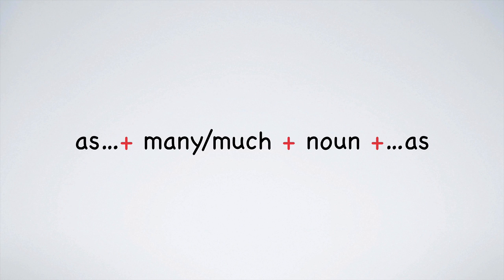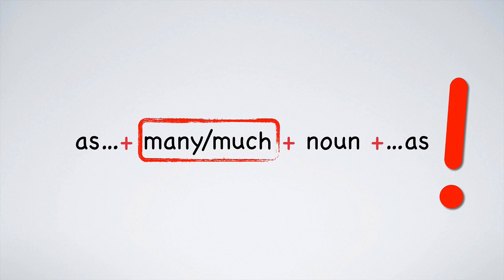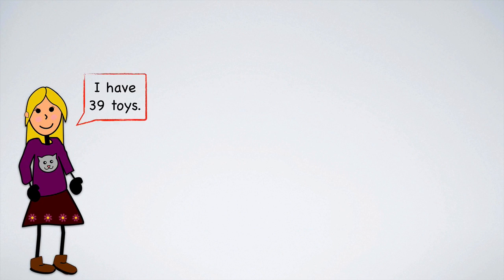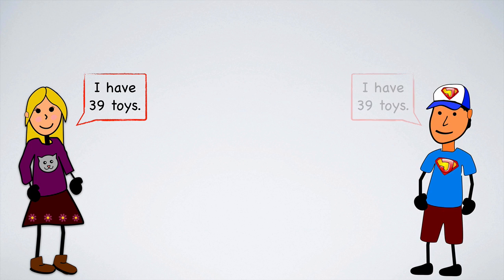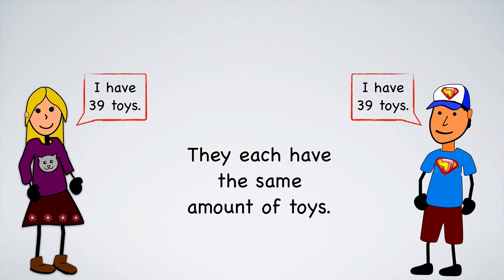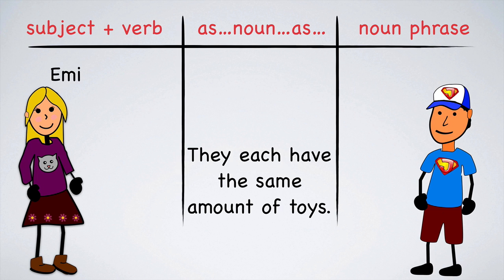And now on to comparing quantities. To compare a quantity, we'll use as noun as. When comparing quantities, you need to use the structure as plus many or much plus noun plus as. It is very important that you remember to put many or much. Many is used before a countable noun and much before an uncountable noun. If you want to talk about inequality, you'll have to make the sentence negative. Emily, how many toys do you have? I have 39 toys. Tyler, how many toys do you have? I have 39 toys.